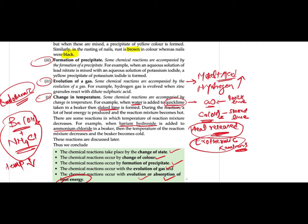Evolution of gas: zinc granules when treated with dilute sulfuric acid or hydrochloric acid, we get hydrogen — that is an example of evolution of gas. Change in temperature was also very important. Quick lime, when taken in a beaker and added with water, slaked lime is formed and a lot of heat is evolved.